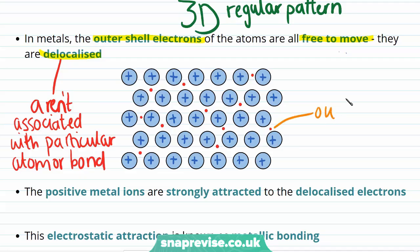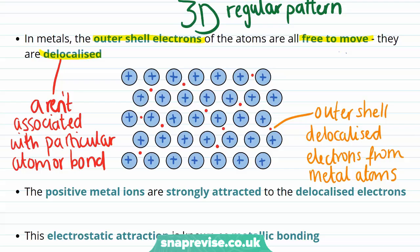The outer shell electrons from each metal atom, which are shown here as red dots, are free to move through a structure which is made up of the remaining metal ions, which have a positive charge due to the loss of the associated negatively charged electrons. However, overall the charges will still balance out, it's just that the positive and negative charges have become separated, as these electrons have become delocalised.